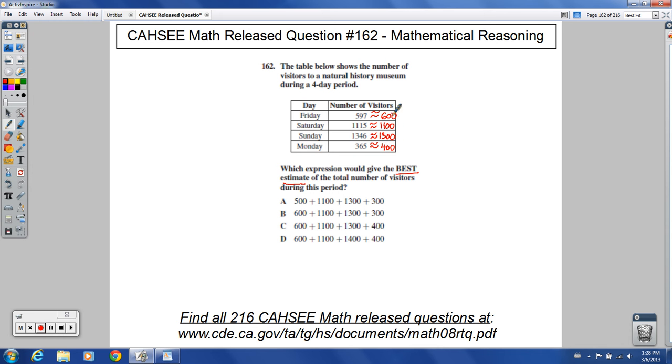So I'm just looking for the one where we have these four numbers. We have 600 plus 1,100 plus 1,300 plus 400. There it is. It is choice C.